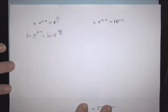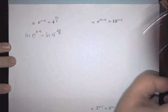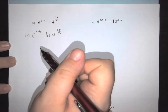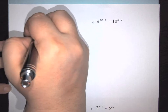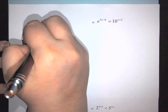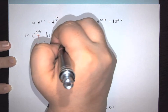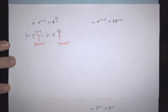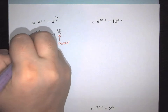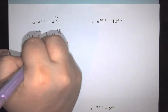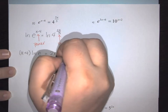Applying the power rule on both sides, this becomes (x minus 4) times natural log of e, equals (2x over 3) times natural log of 4.